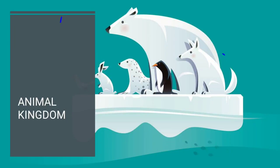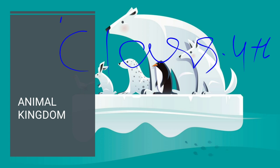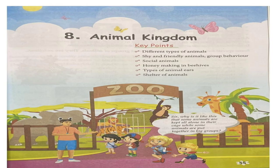Welcome back, dear kids. Today we are going to cover Animal Kingdom for Class 4 EVS. So let's begin. In this chapter, we are going to cover different types of animals, shy and friendly animals, group behavior, social animals, honey making in beehives, types of animal ears, and shelter of animals.